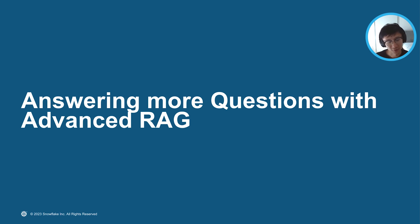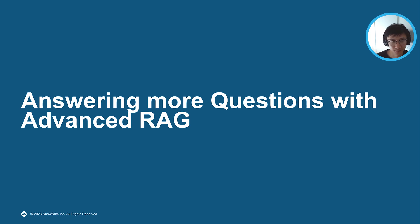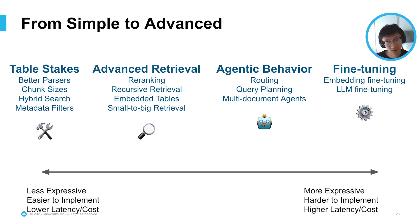We talked about some of the pain points with basic RAG, as well as how to measure performance. Now we can figure out how to actually optimize the system. One way to look at optimizing your RAG pipeline is on a spectrum from simple techniques to advanced techniques. Typically, stuff on the left is simpler, less expressive, easier to implement, and has lower latency and cost — basic stuff you should try first to squeeze out performance.